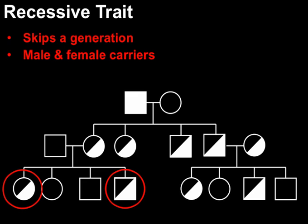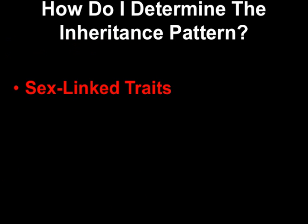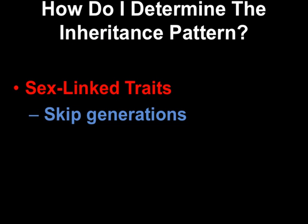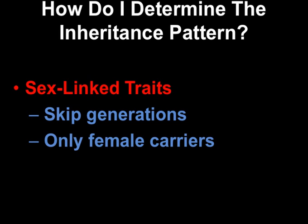That's an important distinction between autosomal recessive and sex-linked recessive. If you see carriers, it's some type of recessive trait. If you see male and female carriers, then it's just a regular recessive trait. In a sex-linked recessive trait, it still skips generations, but we're only going to have female carriers, because a male can't be a carrier of a sex-linked trait.